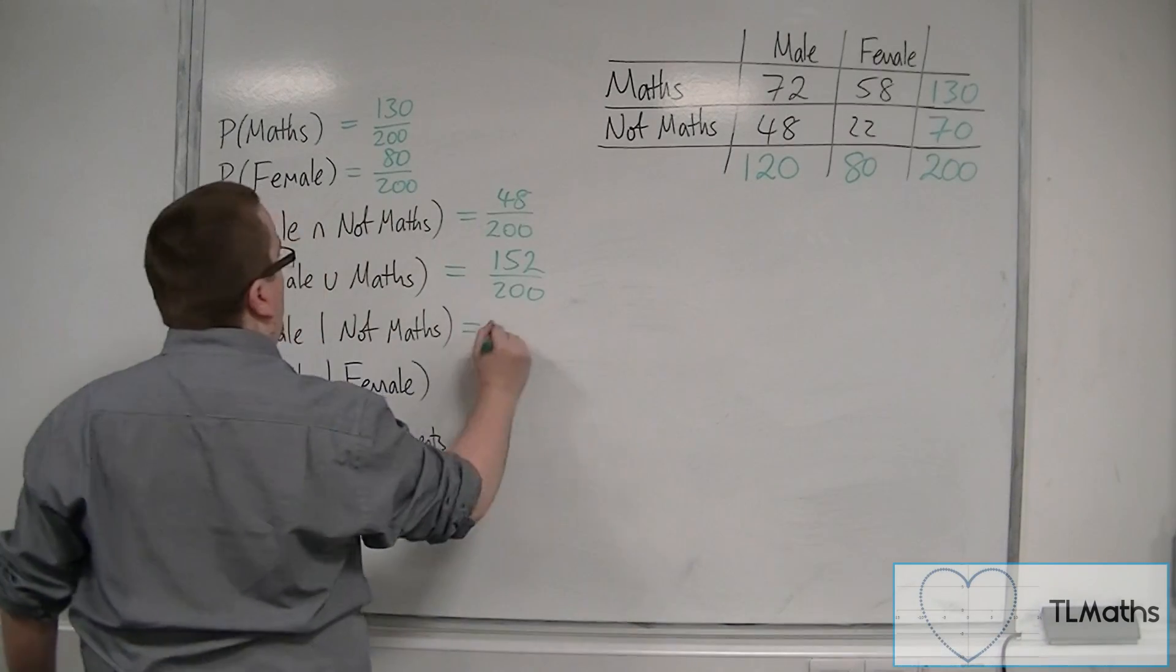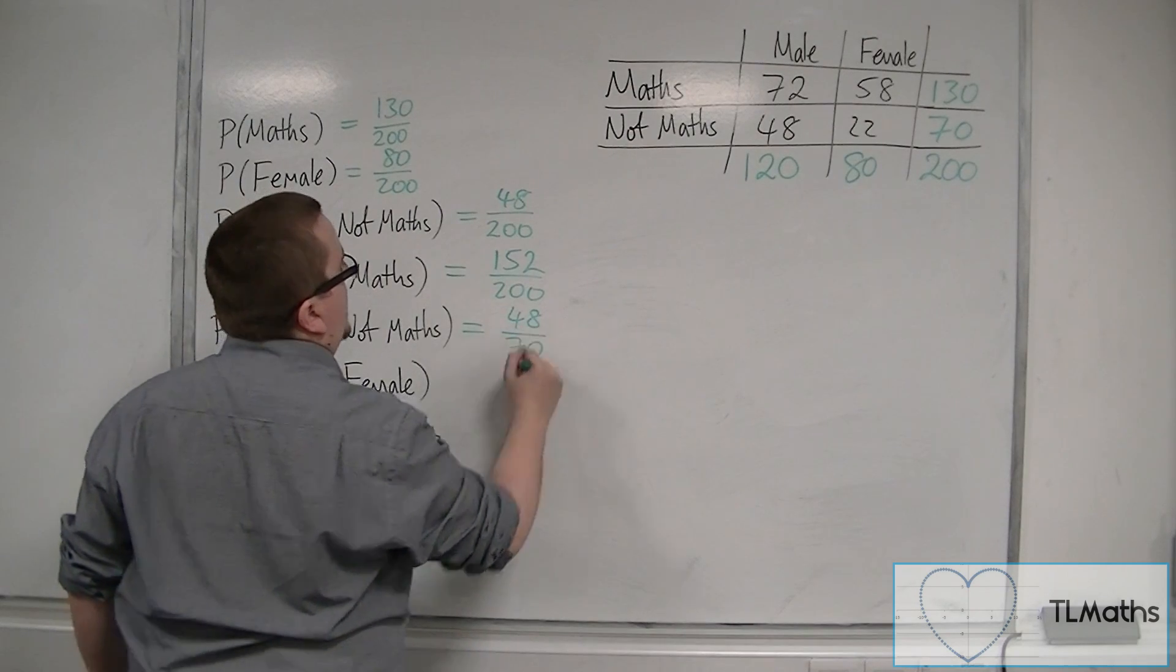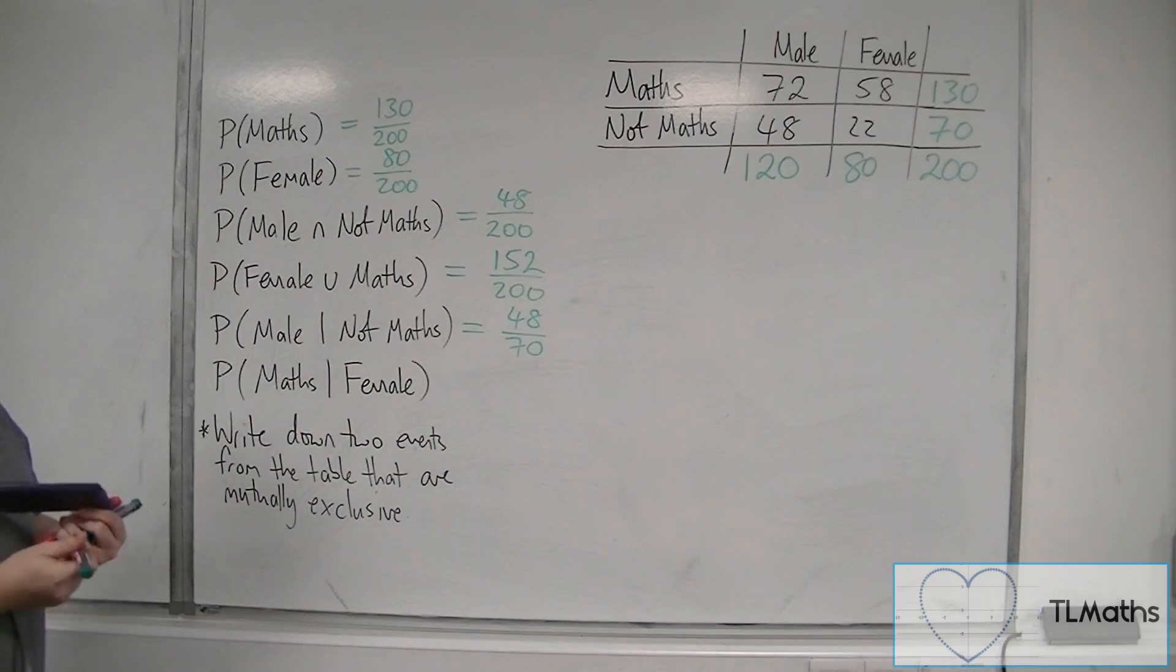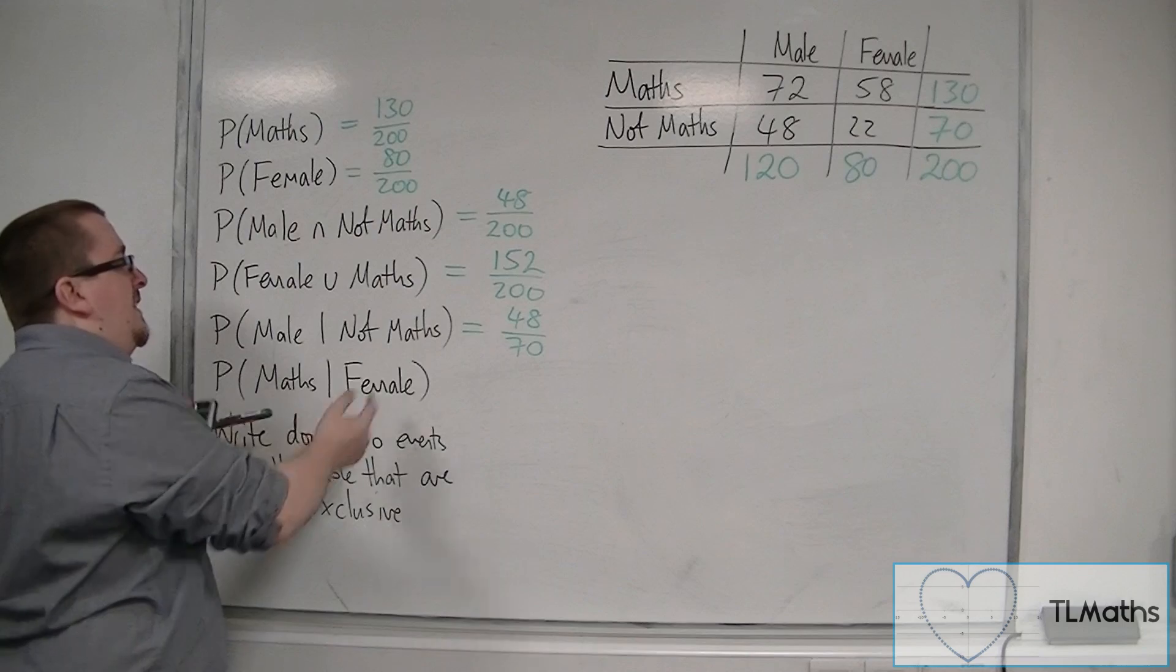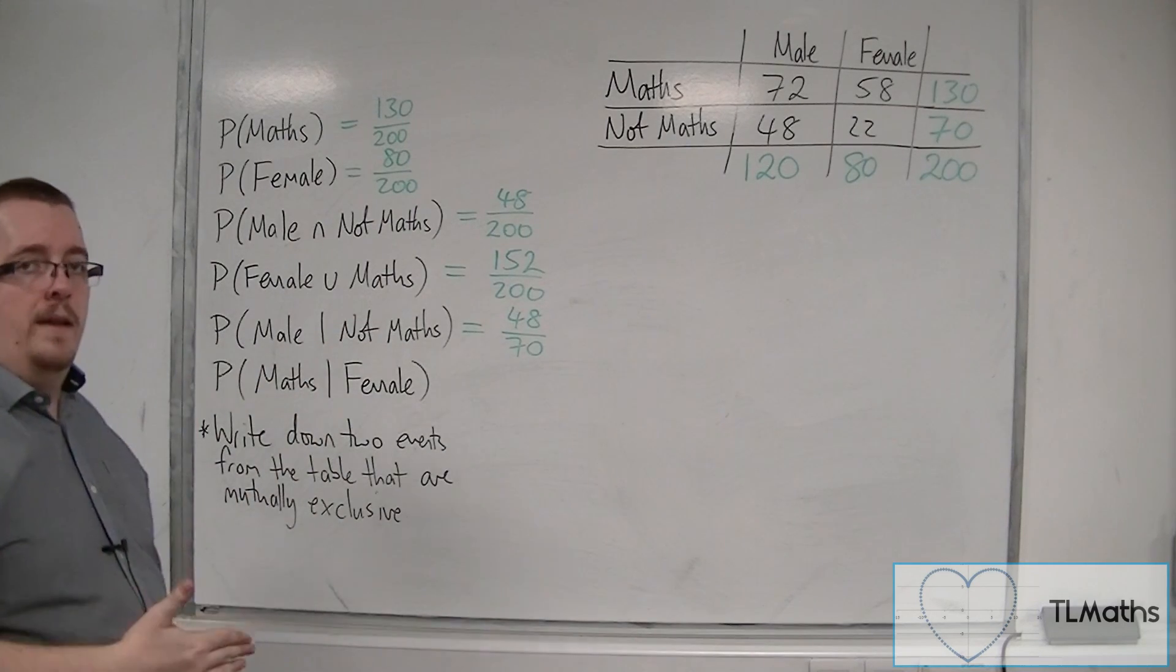And so that is the probability that we want, 48 out of 70. It's no longer out of 200 because we know that we're only selecting from the batch of students that don't do maths.